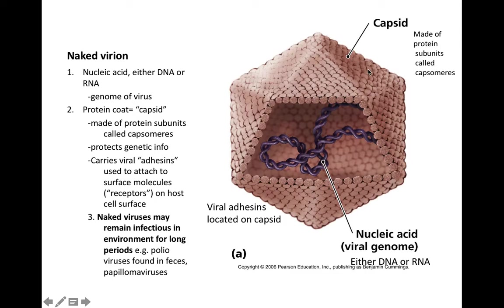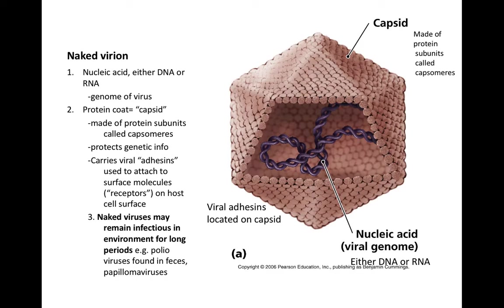One common shape is the icosahedral capsid. An important function of the capsid is to protect the DNA or RNA from destruction. A second function is that on the outer surface of the capsid there are special viral proteins called adhesions. The adhesions bind to complementary host cell surface receptors. The term for a virus attaching to a cell is called adsorption.